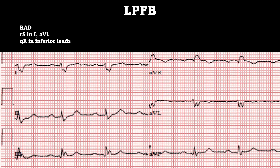Now for the left posterior fascicular block: do we see right axis deviation? Lead I is down and AVF is up — thumbs heading toward each other — so yes, right axis deviation. Do we see a small R and large S in lead I and AVL? Yes — a small positive blip followed by a dominant S wave. Do we have a small Q wave with a dominant R wave in the inferior leads? Yes. All three criteria confirmed — that's your left posterior fascicular block.